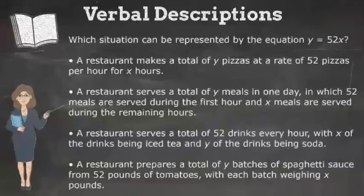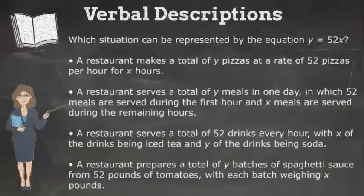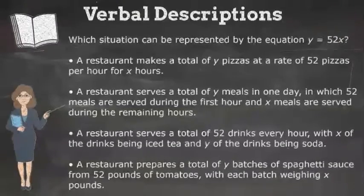So now let's read each answer choice and look at which ones match. A restaurant makes a total of y pizzas at a rate of 52 pizzas per hour for x hours. Y is the total number of pizzas. 52 is the rate, and x is the number of hours. That matches our problem, but let's check the other answer choices before making a decision.